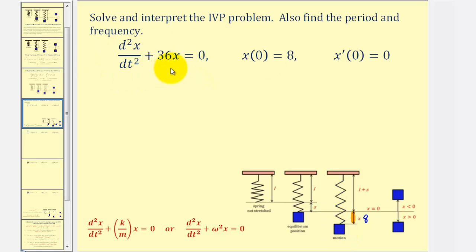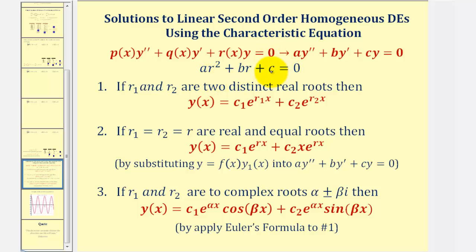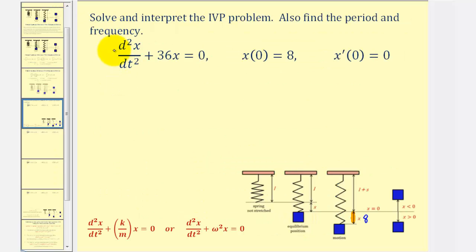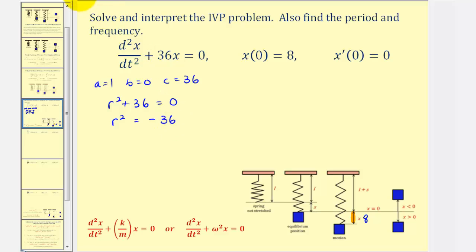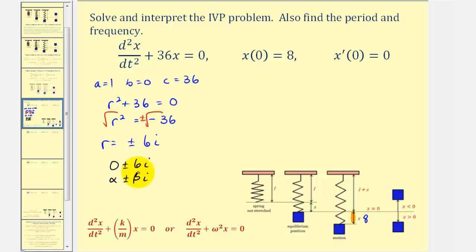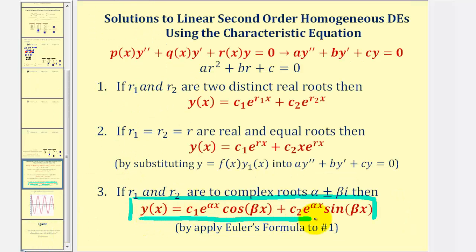Let's solve this differential equation. Because we have a linear second-order homogeneous differential equation with constant coefficients, we use the characteristic equation. Here A equals one, B equals zero, and C equals 36, giving us R squared plus 36 equals zero. Subtracting 36 and taking the square root of both sides, we get R equals plus or minus 6i. These are complex solutions of the form alpha plus or minus beta i, where alpha equals zero and beta equals 6.